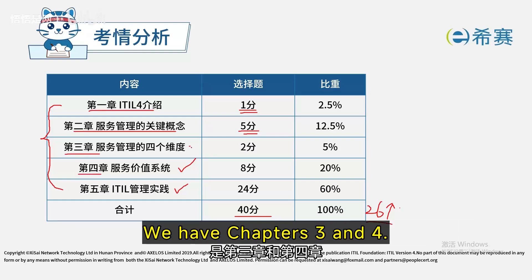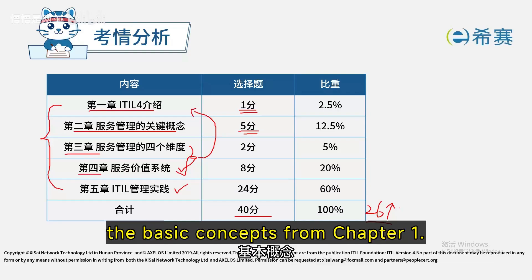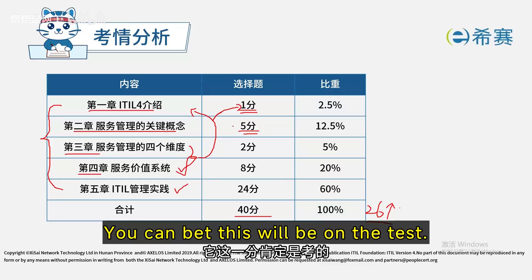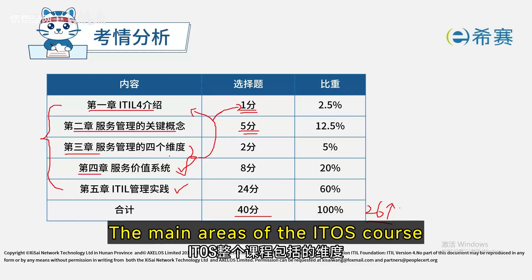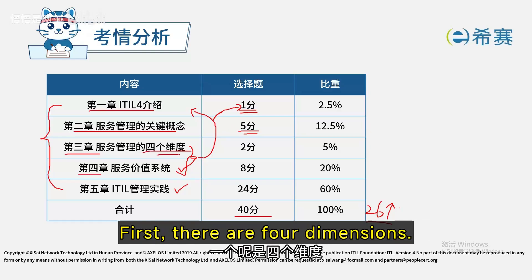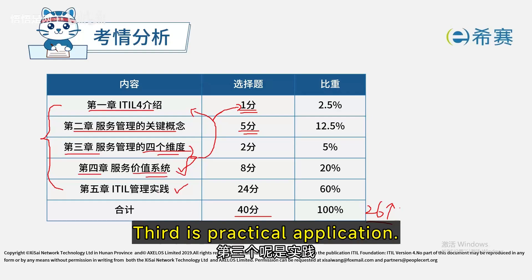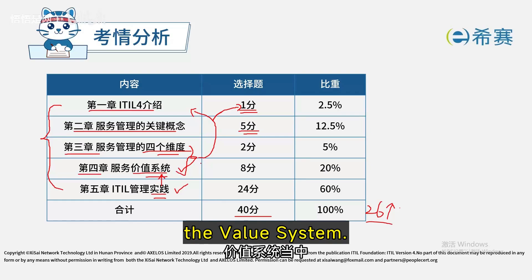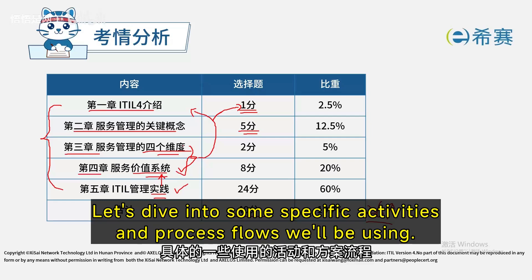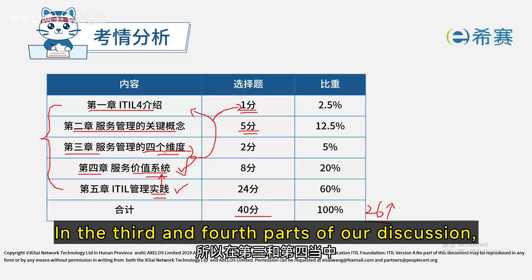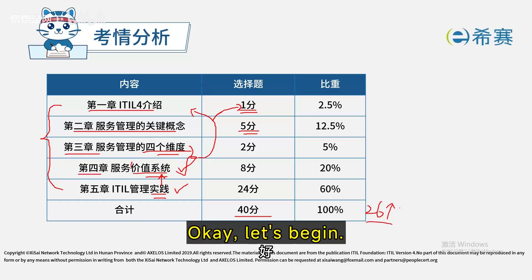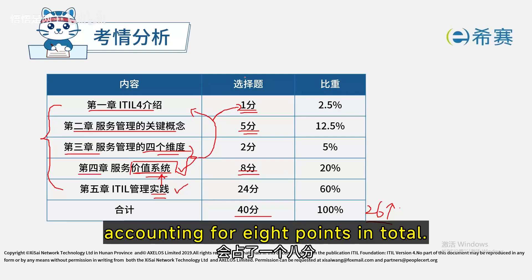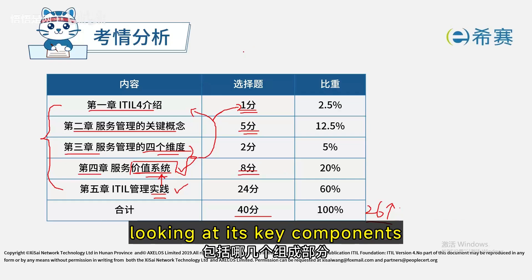Chapters three and four build on the basics from chapter one. The ITIL course covers several dimensions — primarily three: first, four aspects; second, the value system; and third, practice. The value system is absolutely key and carries more weight in the overall score — it's worth about eight points out of the total. We'll examine the value system's key components, including the guiding principles and what defines each step.